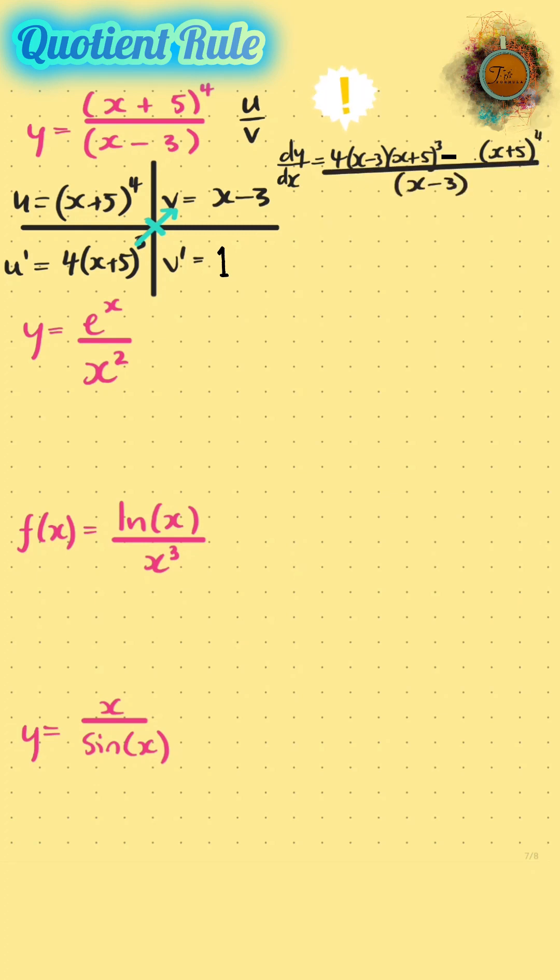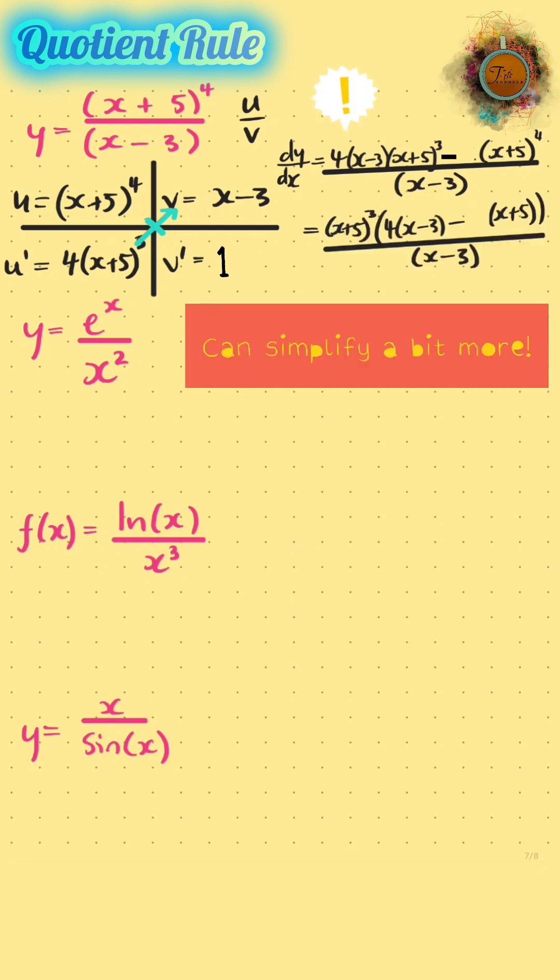Subtract x plus five to the four, all over v squared. You can definitely simplify this. The only thing they have in common is x plus five. I've just seen that x minus three is actually meant to be squared. I don't think there's any more factors to be had there.